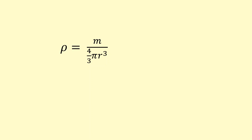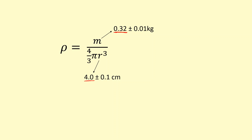Let's say I'm trying to measure the density of a ball. It's mass divided by the volume — in this case the volume of a sphere. So I measure the mass and the radius of the sphere. To calculate the density, I'd use the mass as m: 0.32, and I'd use 4 centimeters, but I had to convert the centimeters first by dividing by 100. When I put that into the equation, you get 9,500 kilograms per meters cubed.